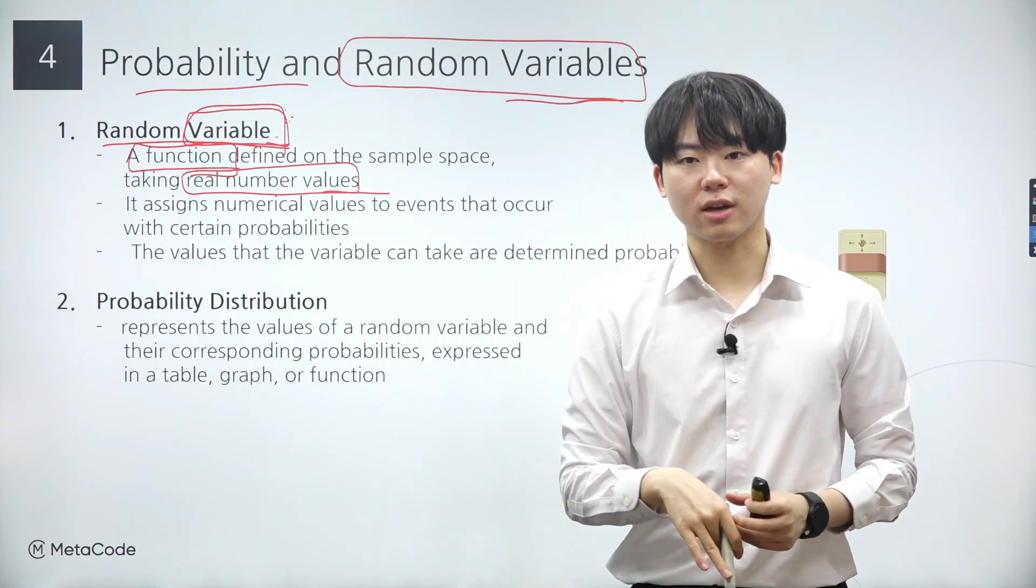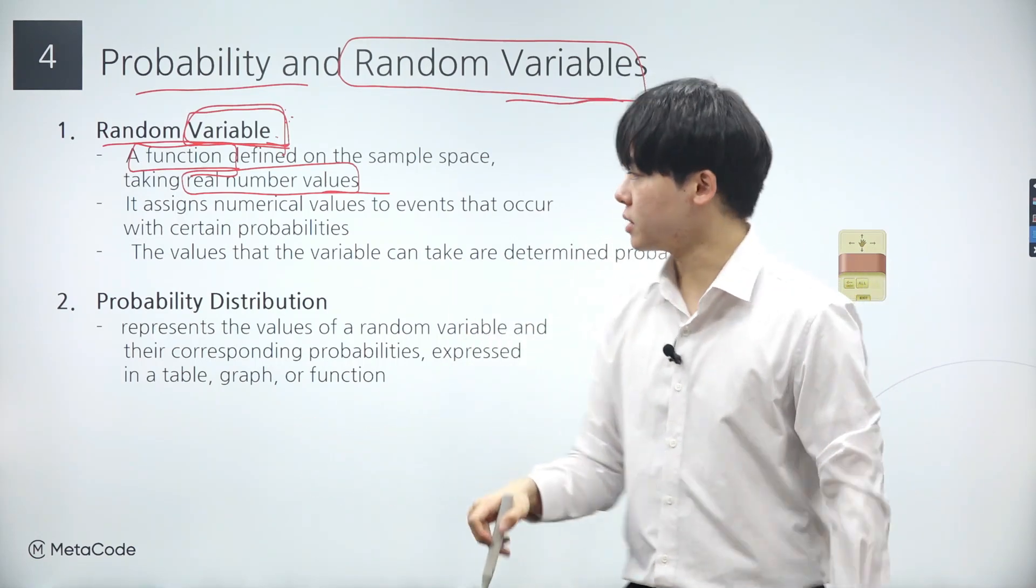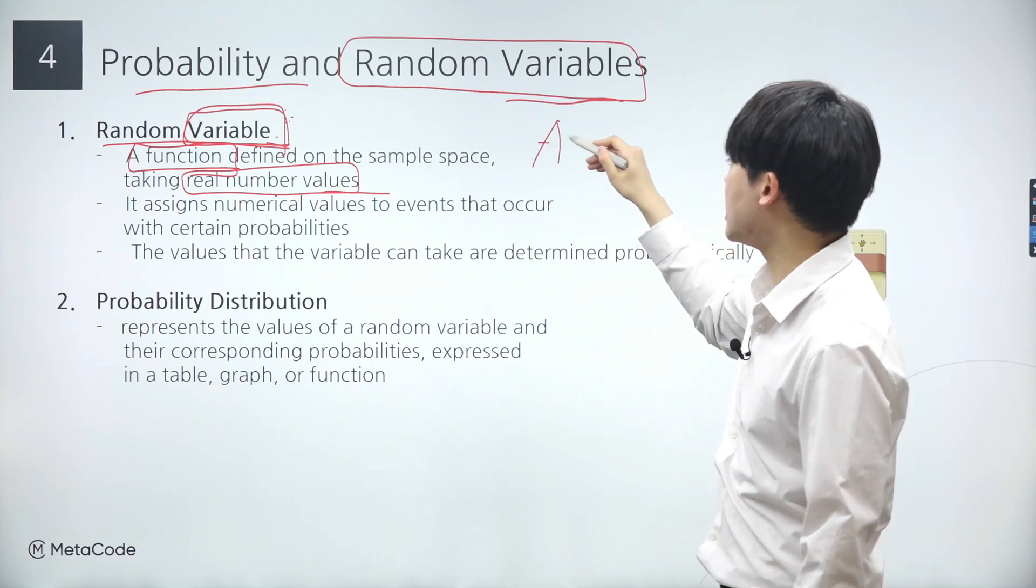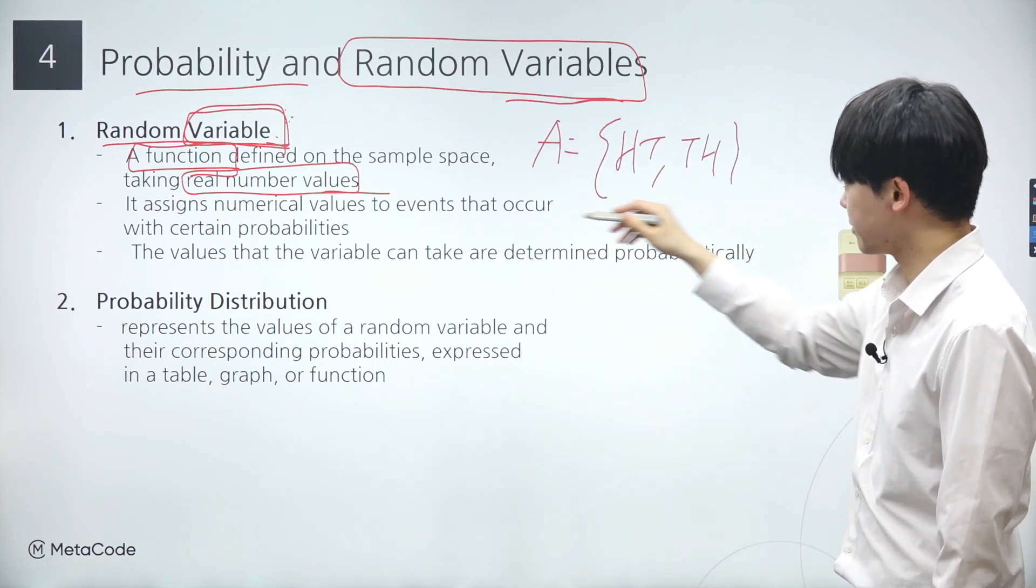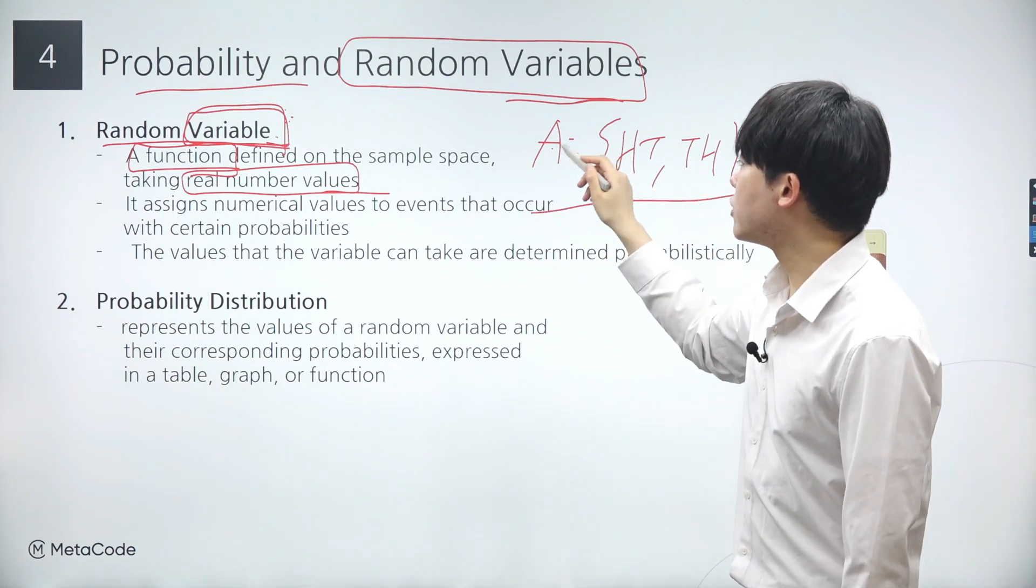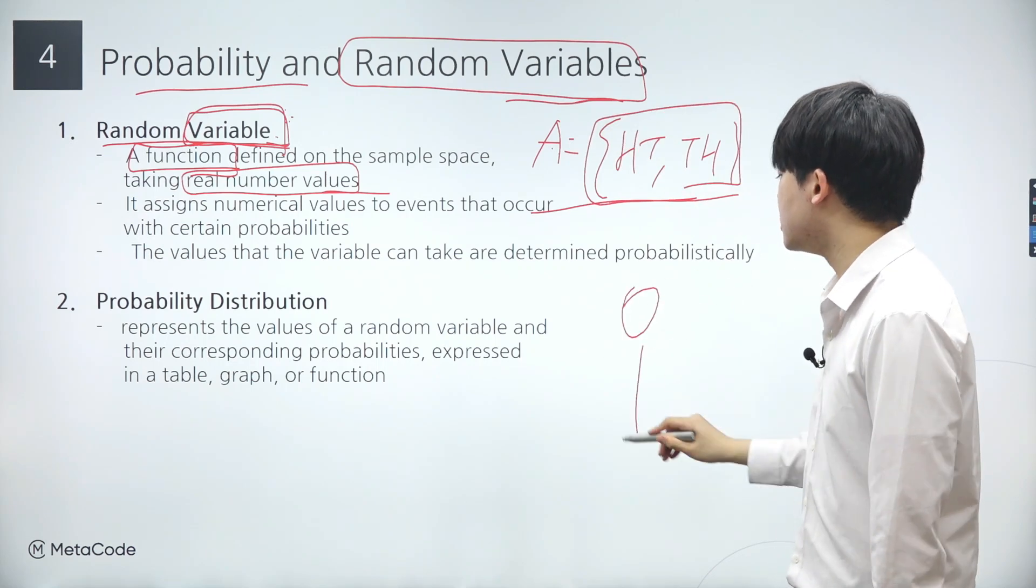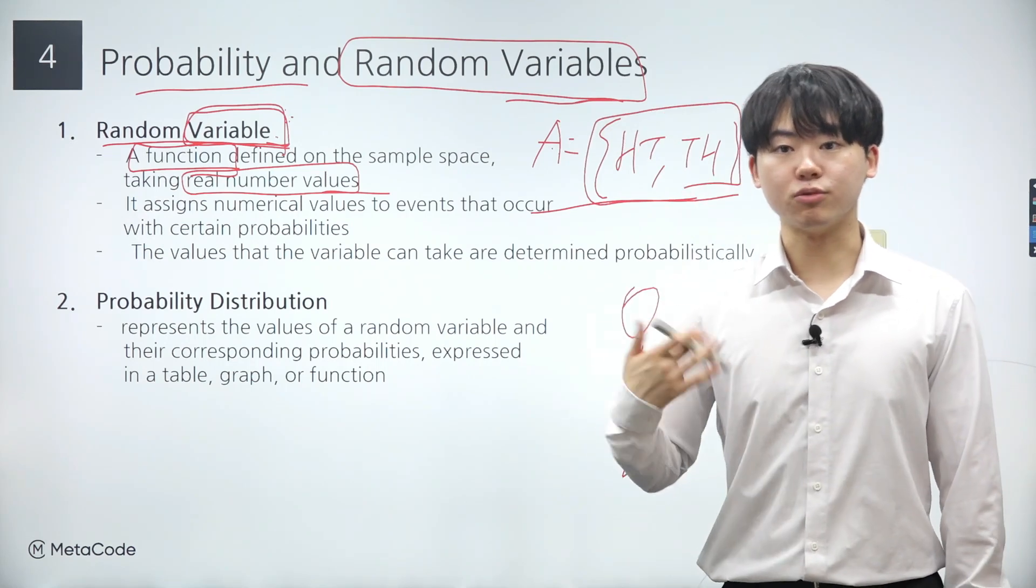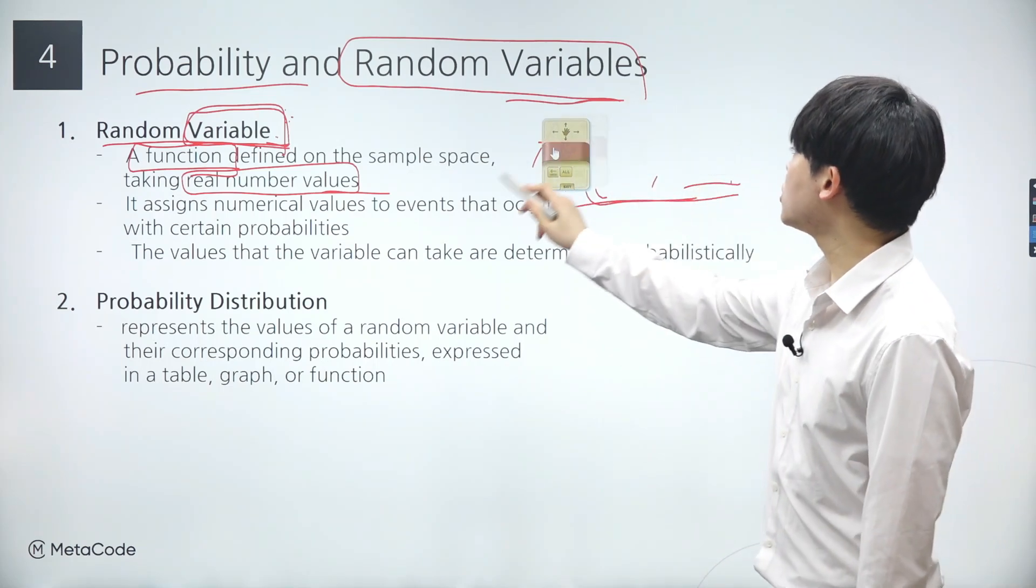Remember our previous example, event A consists of outcomes with exactly one head. Now, if a random variable were to take event A as its input, it might spit out a value like 0 or 2. Therefore, you can think of a random variable as a function that maps outcomes of a random experiment to real numbers.